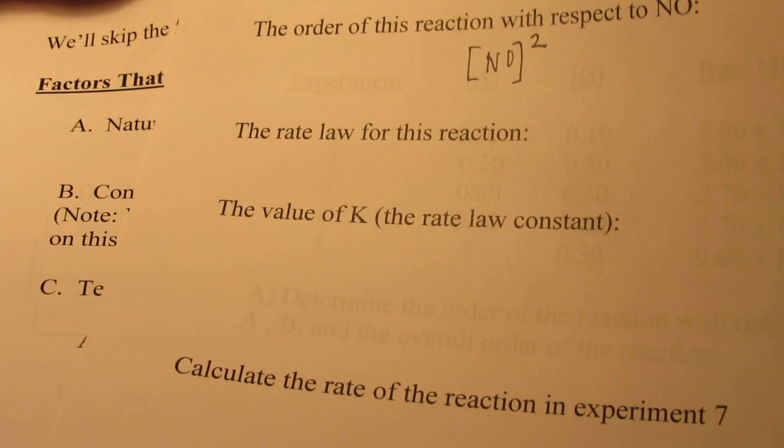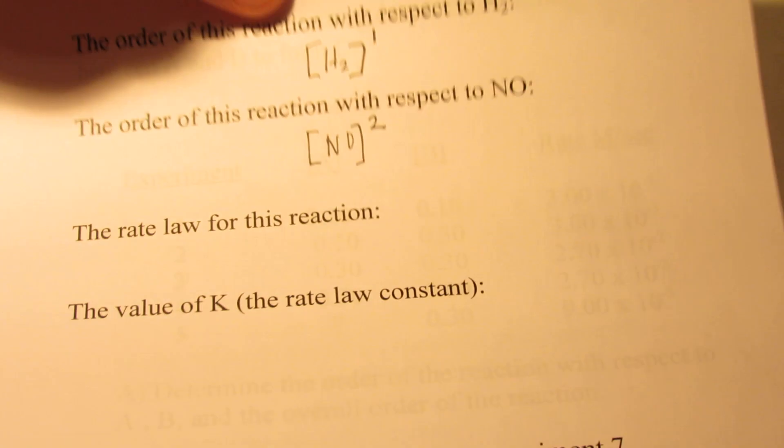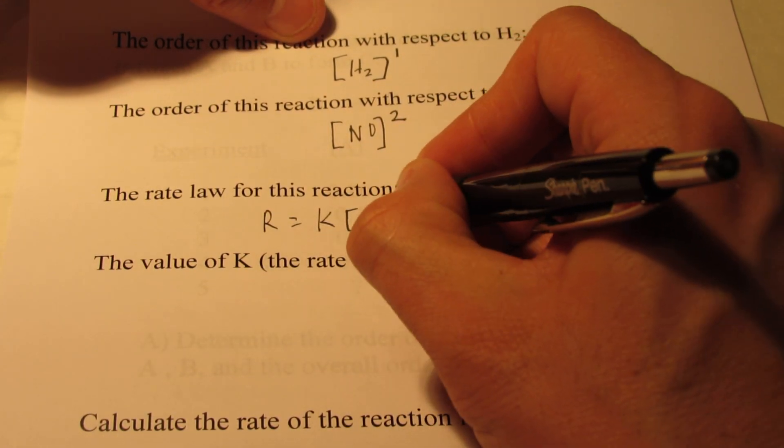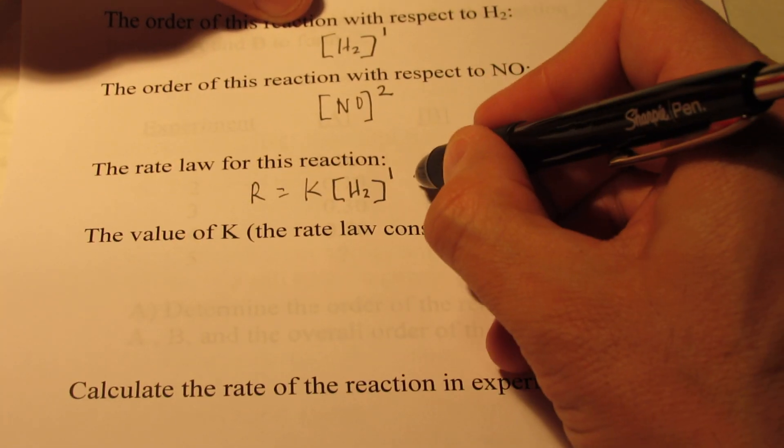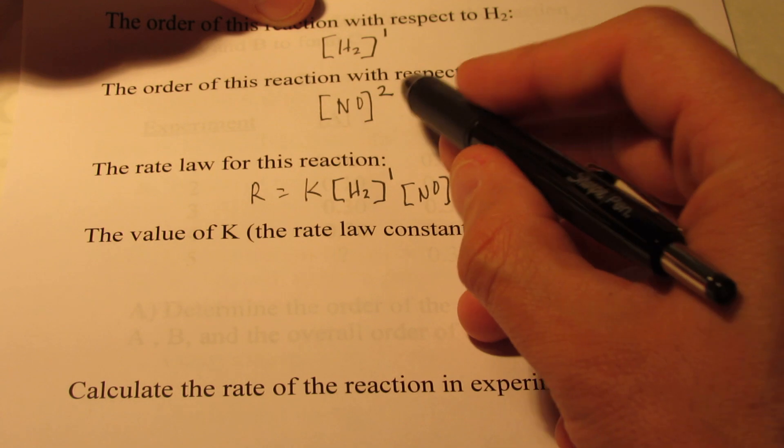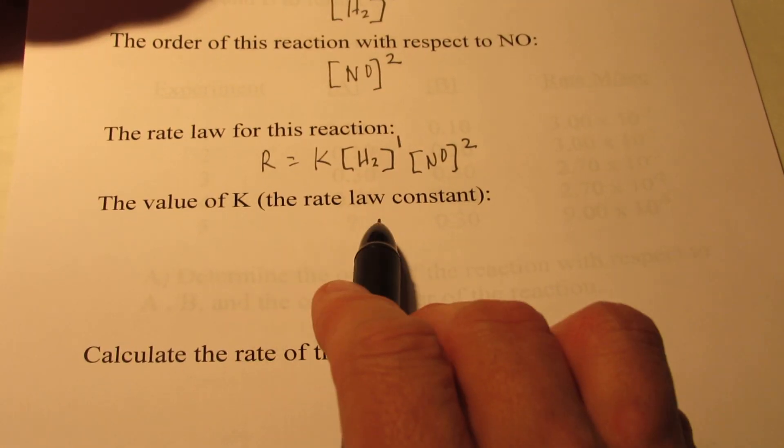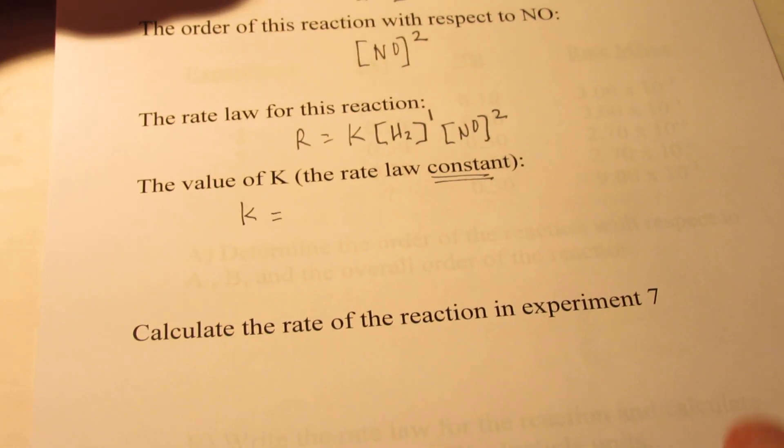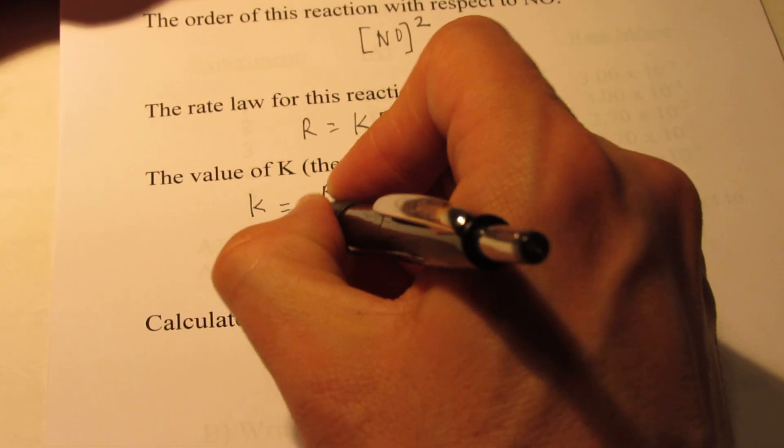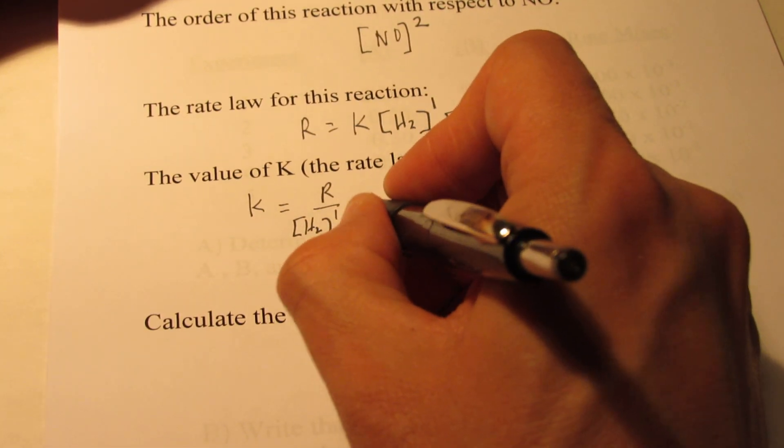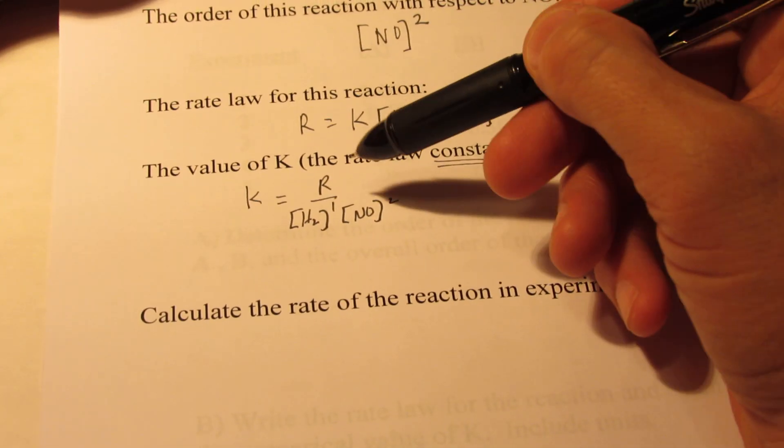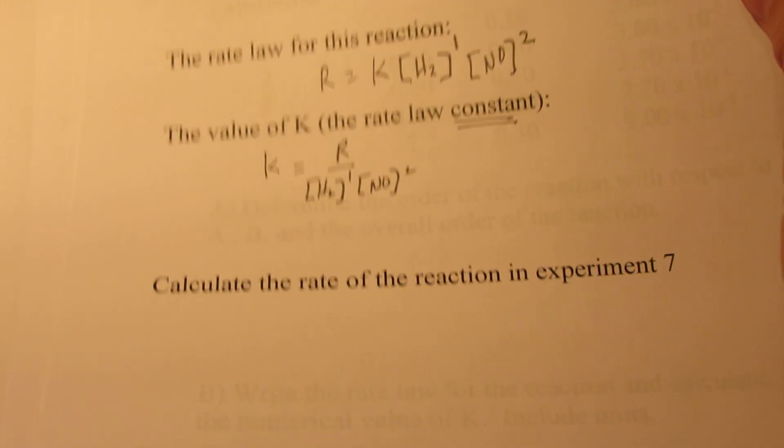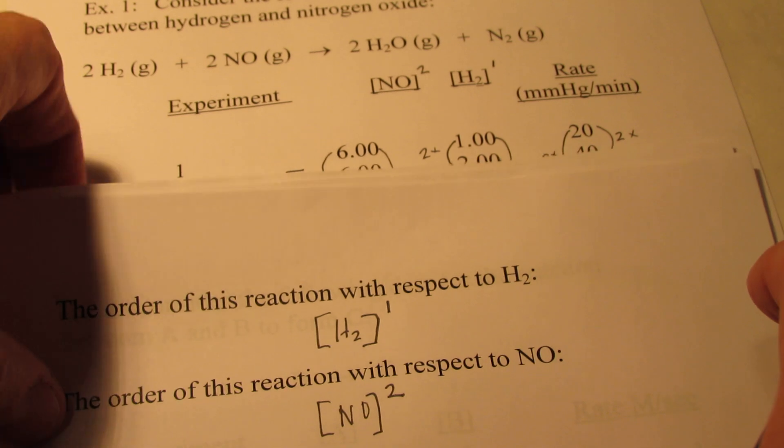Now we can write what's called a rate law. The rate law for this reaction is R equals K, that's how they always begin, times the concentration of H2 to the first power, and NO to the second power. And now we can calculate the value of K, which is called my rate law constant. K would be equal to, we have to do some algebra here, R over H2 to the first and NO to the second. We have to find an experiment that we know the rate and the concentration of H2 and NO. I happen to like to use the first experiments when I do these problems.